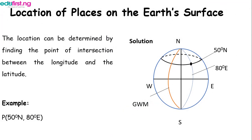How do we locate places on the earth's surface? This is pretty simple. What you have to do to locate a place is to determine your point of intersection between the longitude and the latitude. We have a good example here where location P has 50 degree north and 80 degree east. Note that 50 degree north is for latitude while 80 degree east is for longitude. You draw a circle, place your four cardinal points, go to 50 degree north for latitude, then 80 degree east for longitude. The point of intersection between the latitude and longitude forms location P.